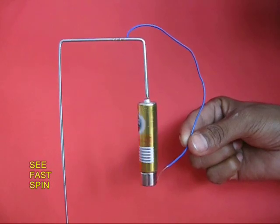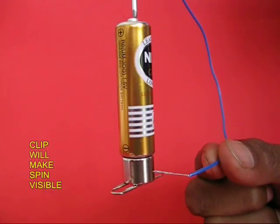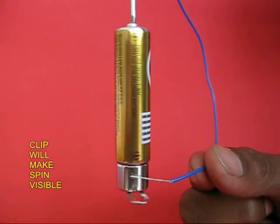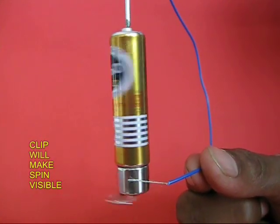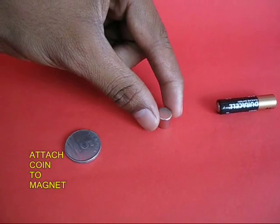Often it might be difficult to make out whether the motor is spinning or not, so instead you can attach a paper clip which will look like the blades of a fan. In this close up you can see the motor spinning much faster.